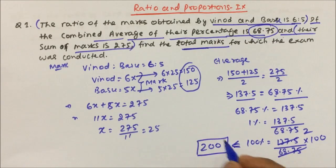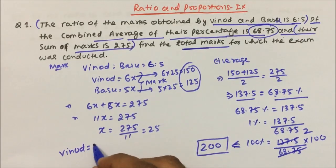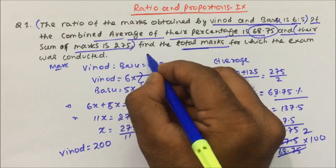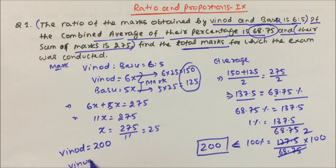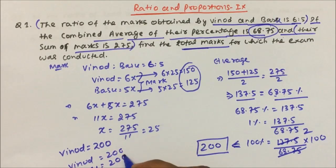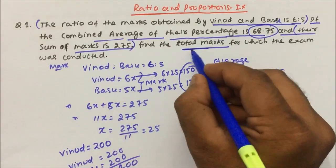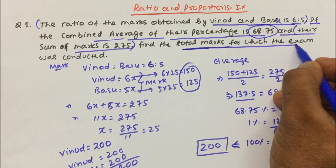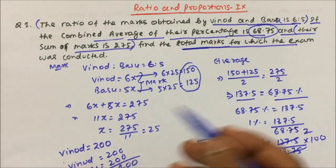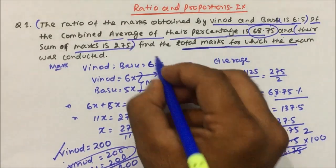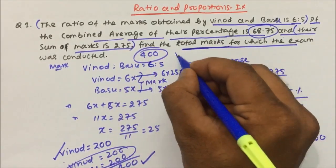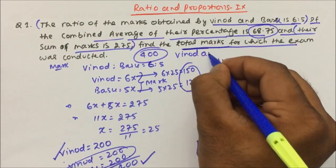So the total paper for which Binod wrote the exam was 200. If the question asks for the total marks for which both Binod and Basu wrote, then 200 plus 200 gives 400. If asking for Binod alone it is 200, for Basu alone it is 200, and if it is combined for both Binod and Basu the answer will be 400.